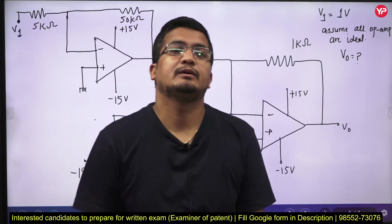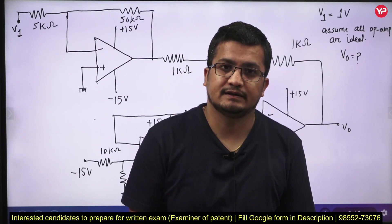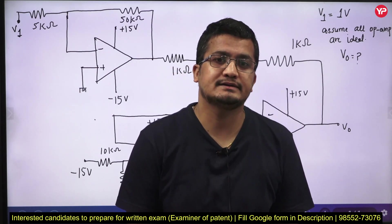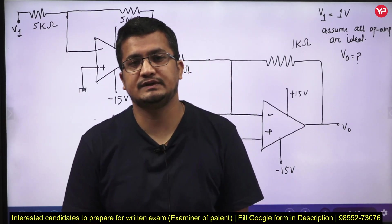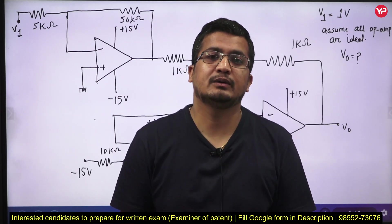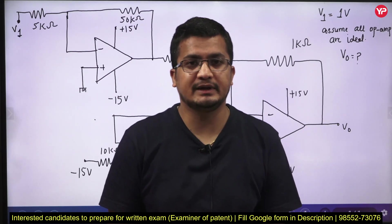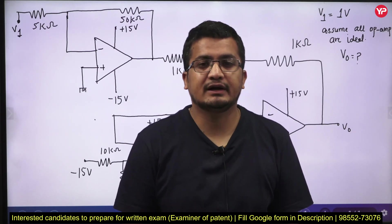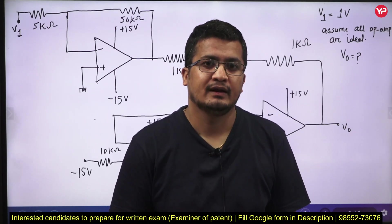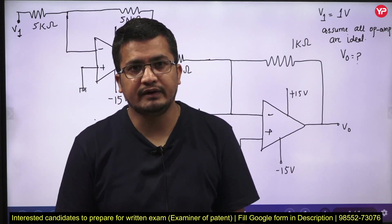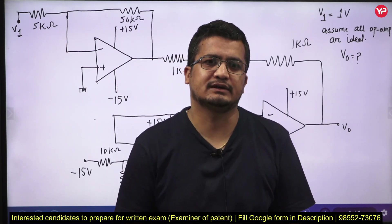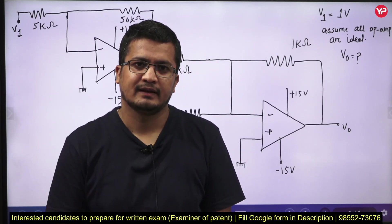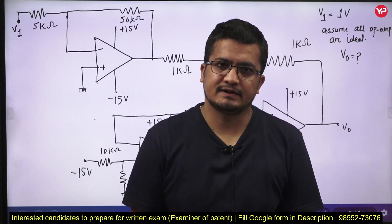Today I am going to discuss one conventional question from the Examiner of Design and Patents, Group A Gazette Officer position written exam. They are going to conduct a preliminary exam, mains, and then an interview. I have taken one question here and we will try to solve it. It is a very fundamental question testing the basic property of the operational amplifier. This is an analog electronics question.